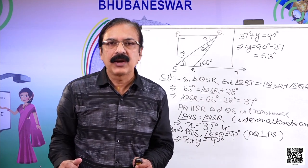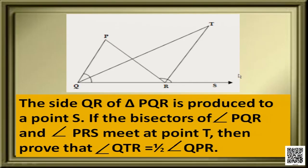In this problem, we used both parallel line properties and the exterior angle property and the angle sum property of a triangle. Let us have a look at another problem. In this question, the side QR of triangle PQR is produced to a point S.